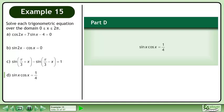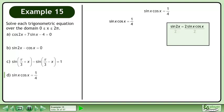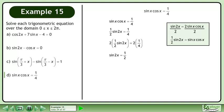In Part D, solve sinx cosx equals 1 over 4. We know that sin2x equals 2sinx cosx. If we divide each side by 2, we get one half sin2x equals sinx cosx. Replace sinx cosx with one half sin2x. Multiply both sides by 2 to isolate sin2x. This gives us sin2x equals one half.